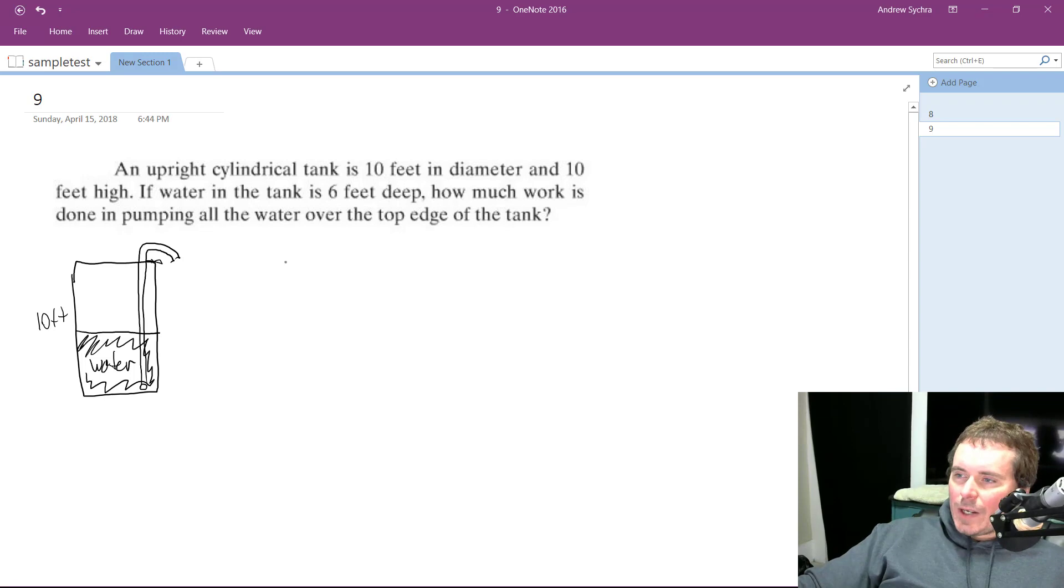So for the total volume of water, you're going to have πr² in this. It's going to be integrated because it's work. So it's going to be π, and then for the radius in this instance...